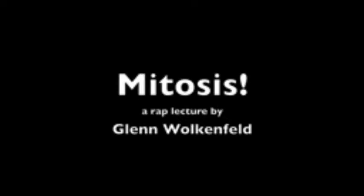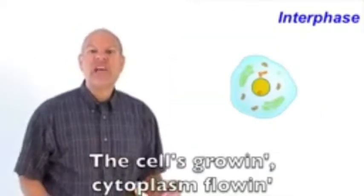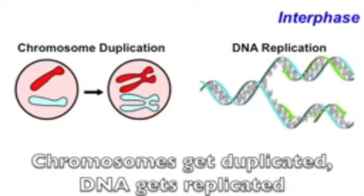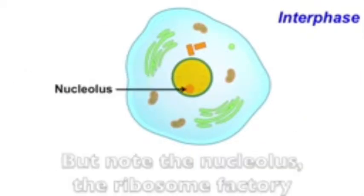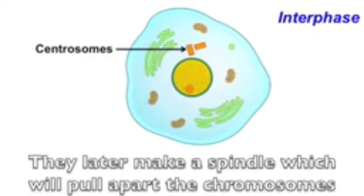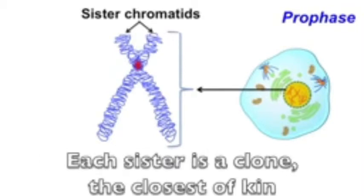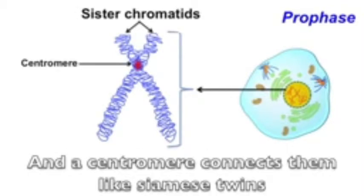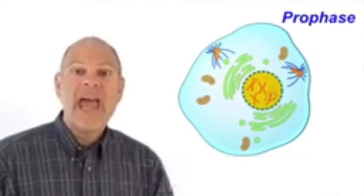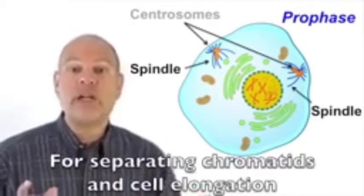Interphase is cell division's longest part — nuclear membranes intact as it starts. The cell's growing, cytoplasm flowing, chromosomes get duplicated, DNA gets replicated, chromosomes are spread out so they can't be seen distinctly. Note the nucleolus — the ribosome factory — and the two centrosomes, which later make a spindle to pull apart the chromosomes. Prophase follows: chromosomes condense, each made of two sister chromatids connected at a centromere. The nucleolus disappears as the centrosomes separate, starting spindle formation for separating chromatids and cell elongation.